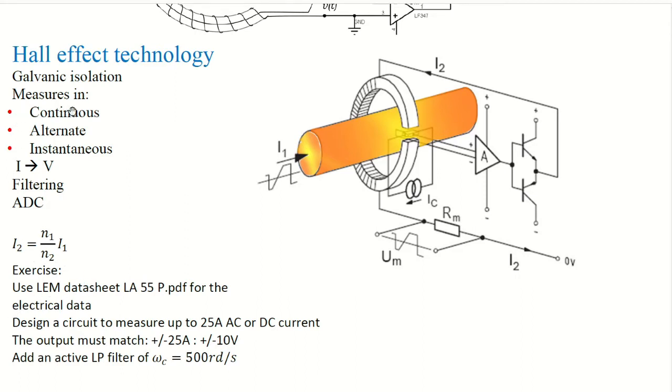So this galvanic isolation, because there is no electrical contact between the I1 and I2 circuits. It's very useful when interfacing power devices to microelectronics. And it can measure in continuous, in alternate current and in instantaneous. So AC, DC, any kind of current.